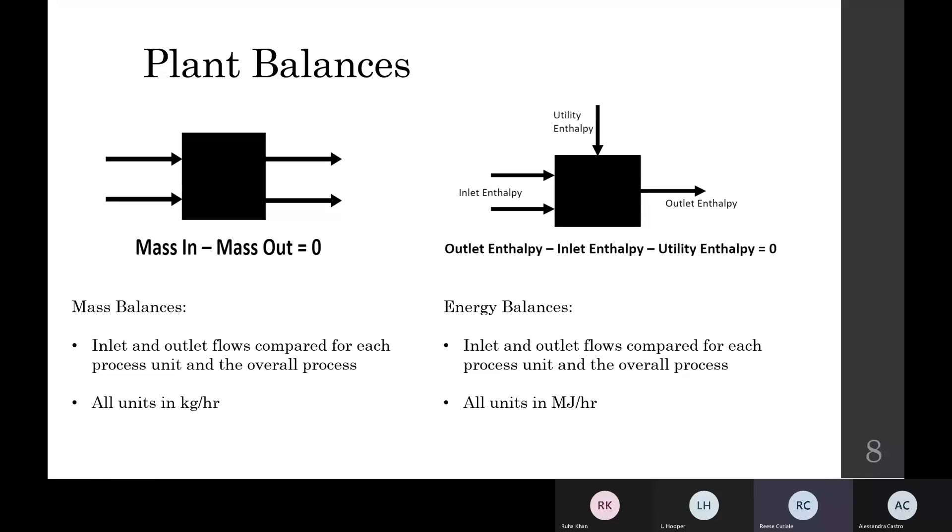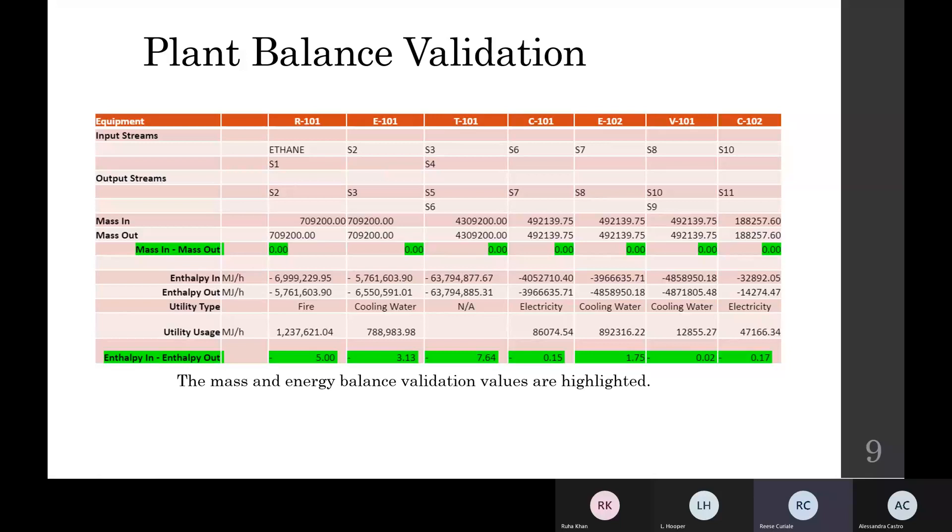For the purposes of simplicity, it is assumed that these balances operated at steady state and there was negligible heat transfer to or from the environment. Each of the mass and energy balances equated to nearly zero and had less than a 1% error, which allowed us to validate these balances as can be seen in the slide in the green highlighted sections.